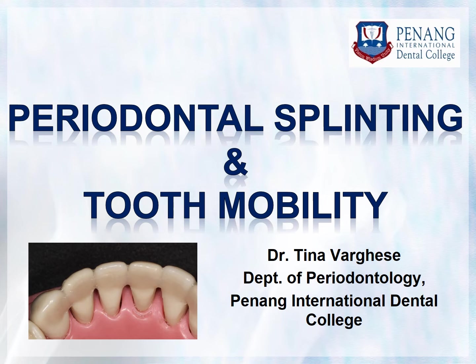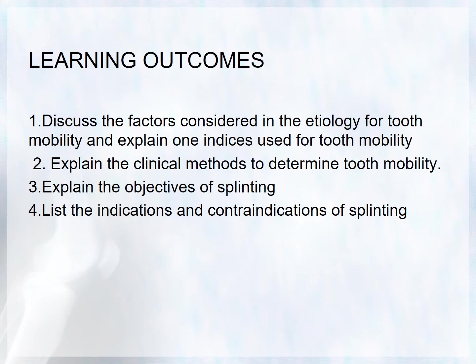Good morning. Today's topic is on periodontal splinting and tooth mobility. The learning outcomes are: discuss the factors considered in the etiology of tooth mobility, explain the index used for tooth mobility, explain the clinical methods to determine tooth mobility, explain the objectives of splinting, and list the indications and contraindications of splinting.